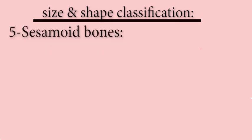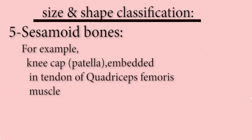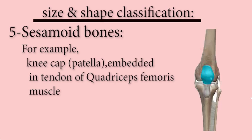Sesamoid bones are bony nodules embedded within a tendon or muscle. Their number is not fixed. They act as pulleys and protect tendons from trauma. A common example of a sesamoid bone is the kneecap, which is embedded in the tendon of the quadriceps femoris muscle.